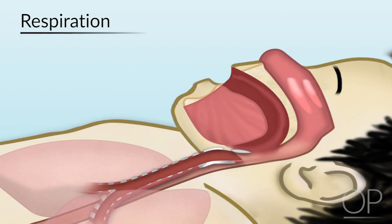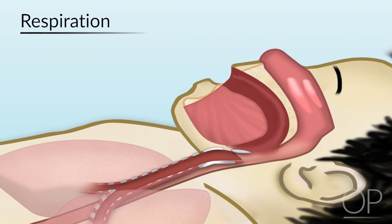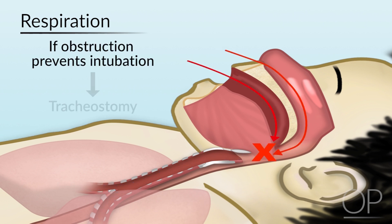Normal respiration requires air to pass through the nose and mouth into the pharynx, through the larynx, and then down to the lower respiratory tract. Obstruction at any of these sites can lead to respiratory distress and, depending on the site of obstruction, can prevent intubation and necessitate a tracheostomy.